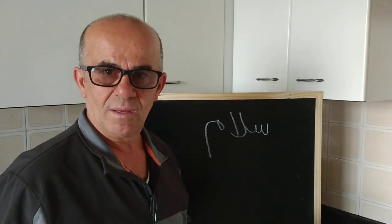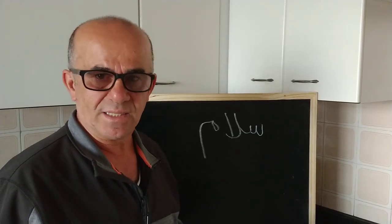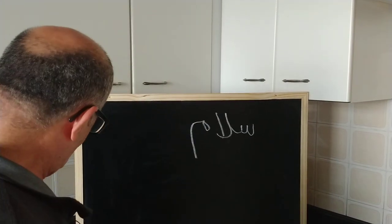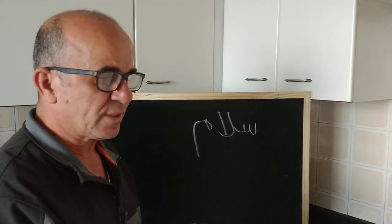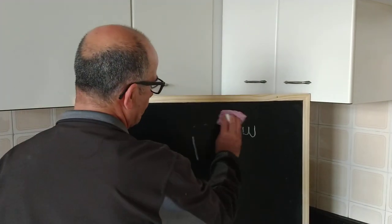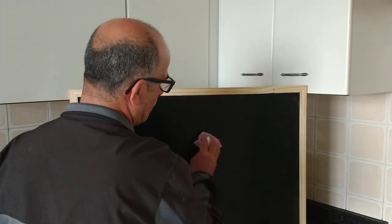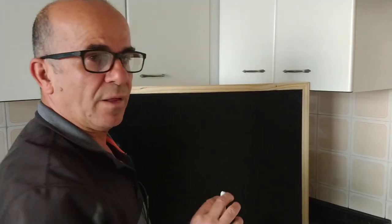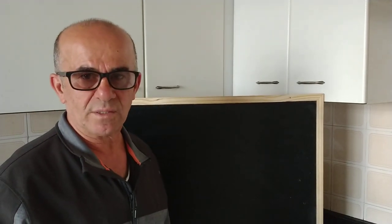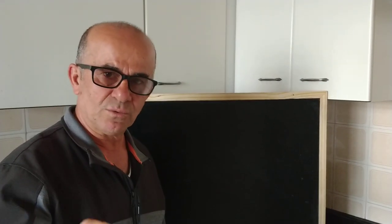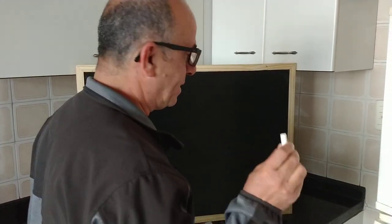So what are these letters? It's easy — I'll tell you all of them. The first group is letters that you cannot join from the left. You can join from the right — you come from the right, and when you come to Aleph, you stop. That's the first letter.